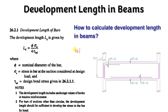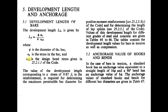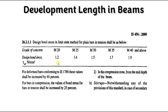Now let us see how to calculate the development length in beams. The formula is given in IS 456:2000, Clause 26.2.1: Ld = (φ × σs) / (4 × τbd), where φ is the nominal diameter of the bar, σs is the stress in the bar at the section considered at design load, and τbd is the design bond stress given in Table 26.2.1.1. As per SP16, the stress in the bar is taken as 0.87 fy.